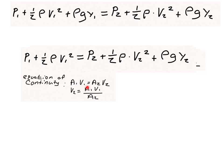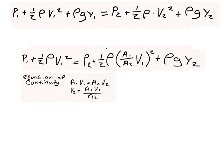The equation of continuity states that area 1 times velocity 1 equals area 2 times velocity 2, where the areas correspond to the pipe radius at the bottom and top. Solving for v2, we get v2 equals A1 times v1 divided by A2, and we can substitute this expression into the Bernoulli equation.